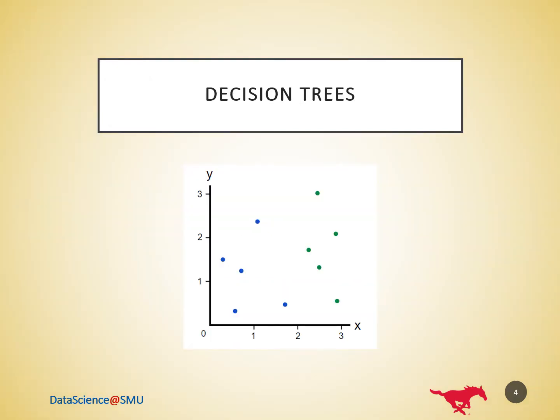Training a decision tree consists of iteratively splitting the current data into two branches. Say we had the following data points. Right now we have one branch with five blues and five greens. Let's make a split at x equals 2. This is a perfect split — it breaks our dataset perfectly into two branches: left branch with five blues, right branch with five greens.